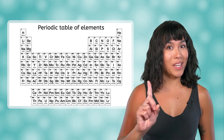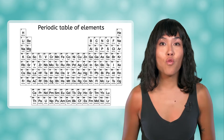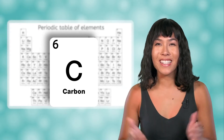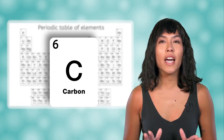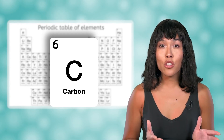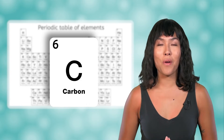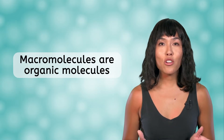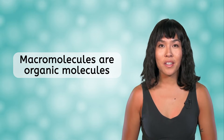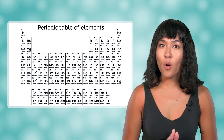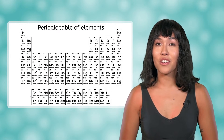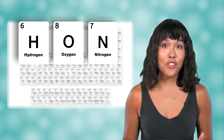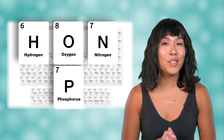I'll give you a hint — it's an element that can form strong bonds with up to four other atoms. Carbon! Carbon is the only element capable of providing the structure for large, complex macromolecules. Because they are carbon-based, macromolecules are organic molecules. But carbon is not the only element included in these biological structures. We'll find lots of hydrogen, oxygen, nitrogen, and phosphorus sprinkled in as well.